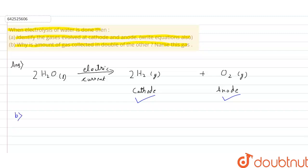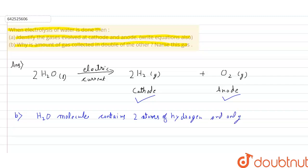In the question, we have been asked why is the amount of gas collected double that of the other. Because the H₂O molecule contains 2 atoms of hydrogen and only 1 atom of oxygen. So this is the reason that we get 4 hydrogen atoms, and only 2 oxygen atoms. The gas which is double in amount is hydrogen gas.